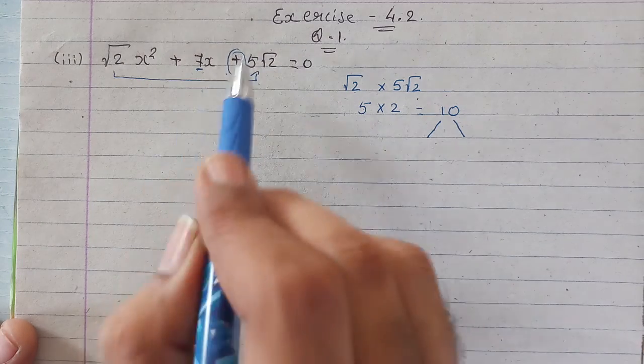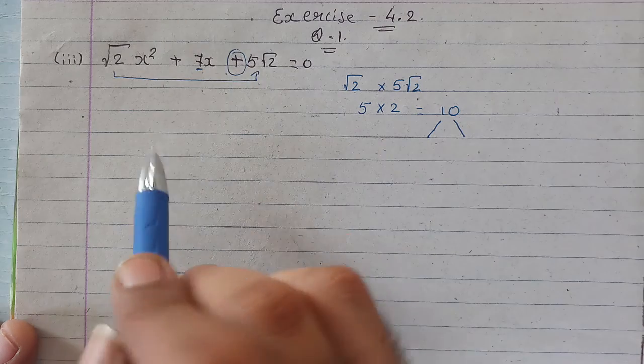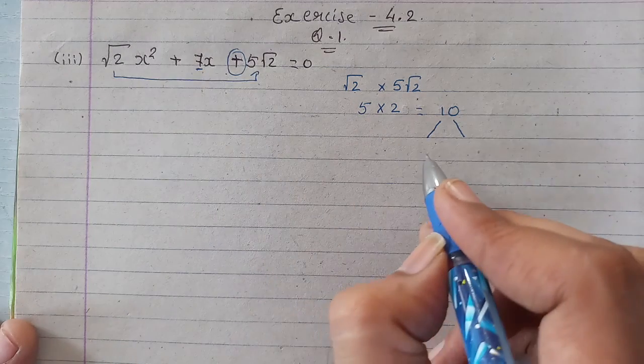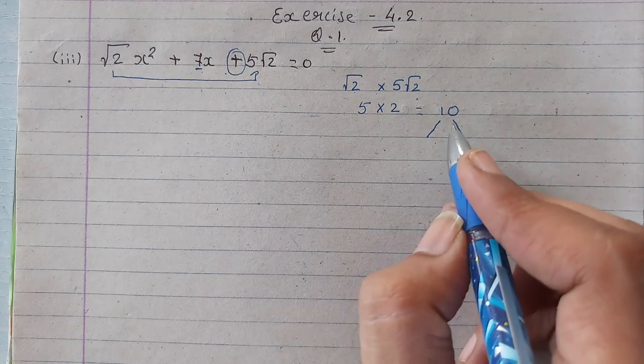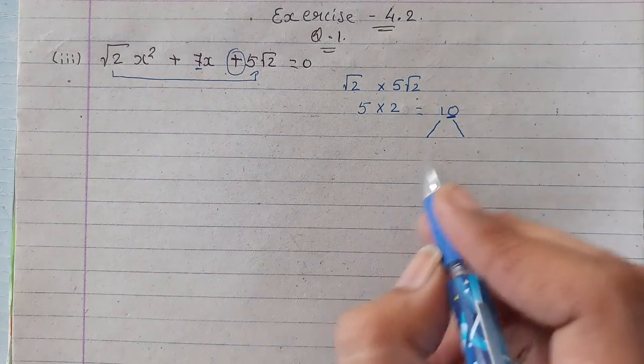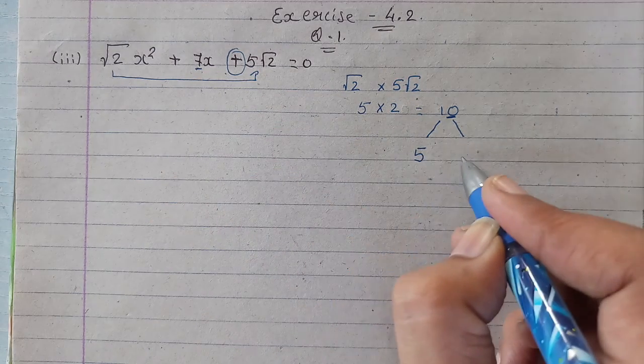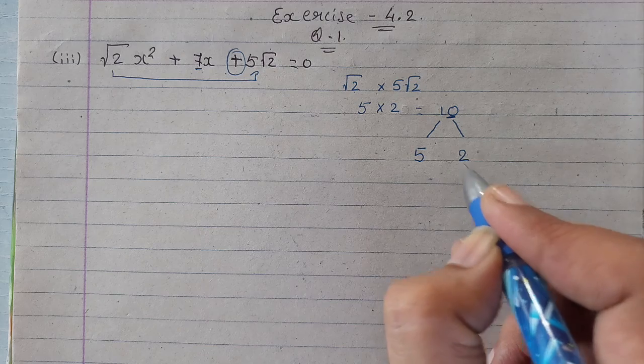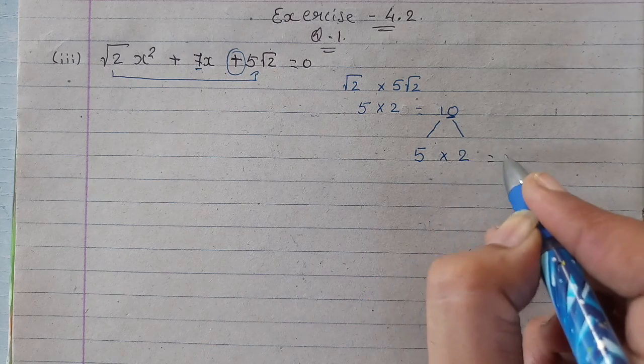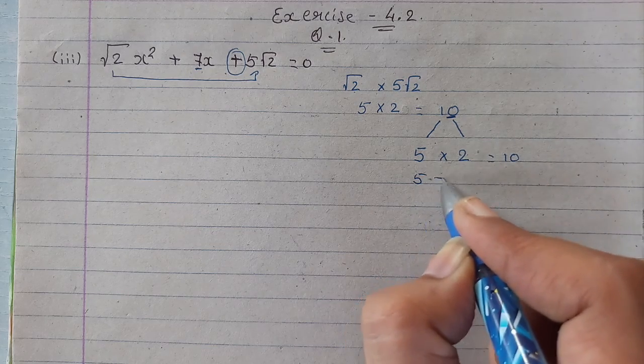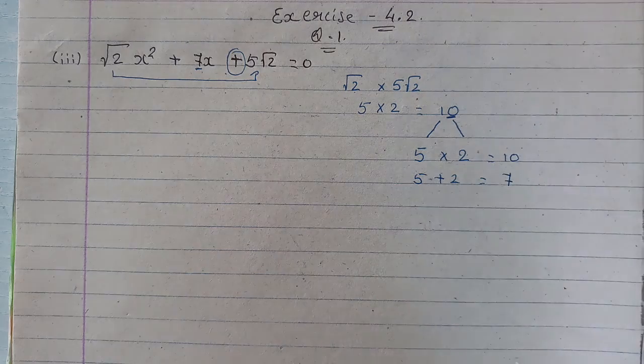So the difference is the last sign. Now, two factors whose multiplication is 10 and when you add them you get 7. The factors will be 5 and 2. If you do 5 into 2, it becomes 10. And if you do 5 plus 2, it becomes 7.